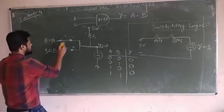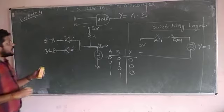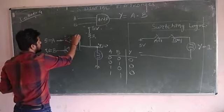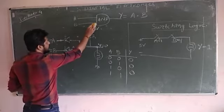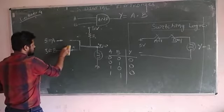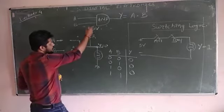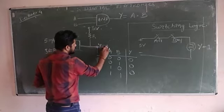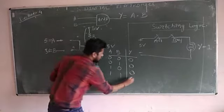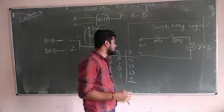When both inputs are high and both diodes are off, Y is not connected to ground. The supply reaches the bulb and Y equals 1. In this way we design the AND gate using a diode.